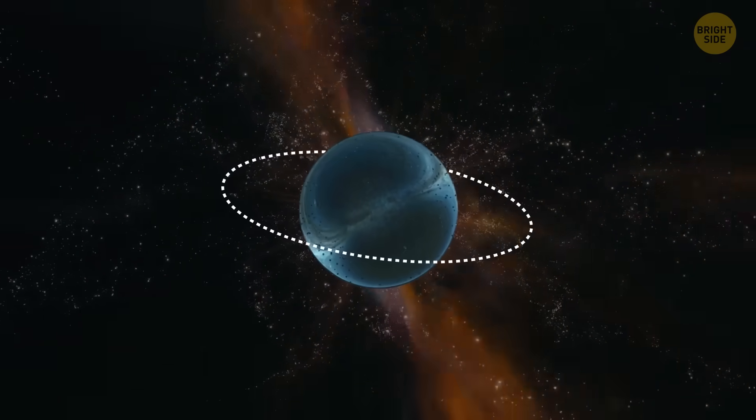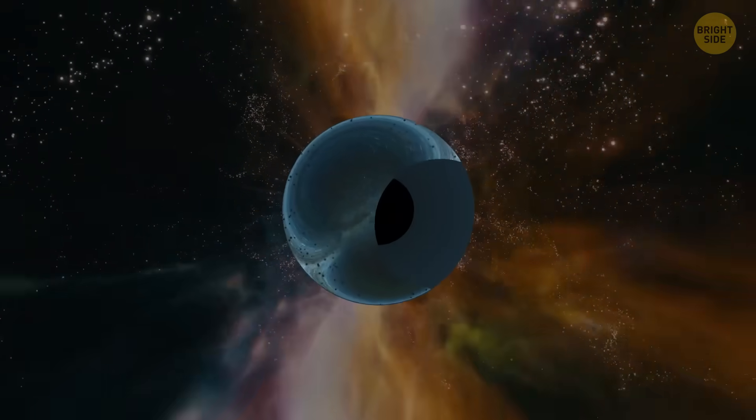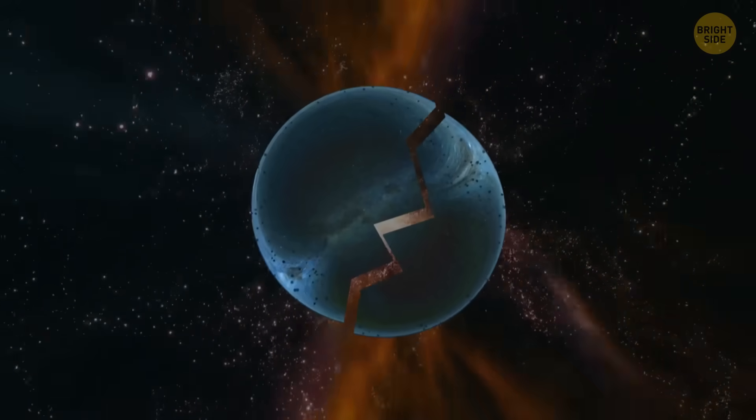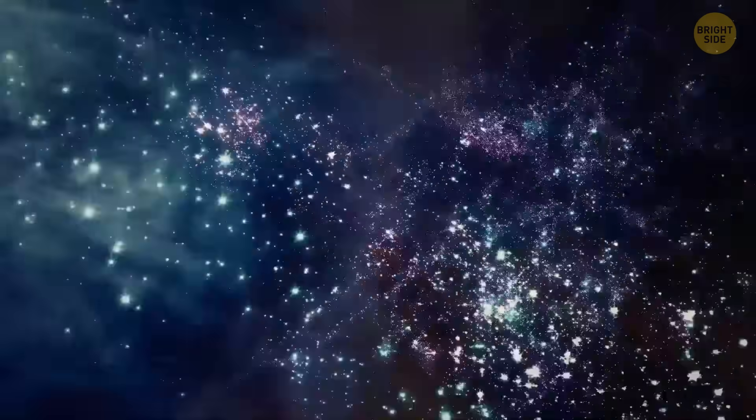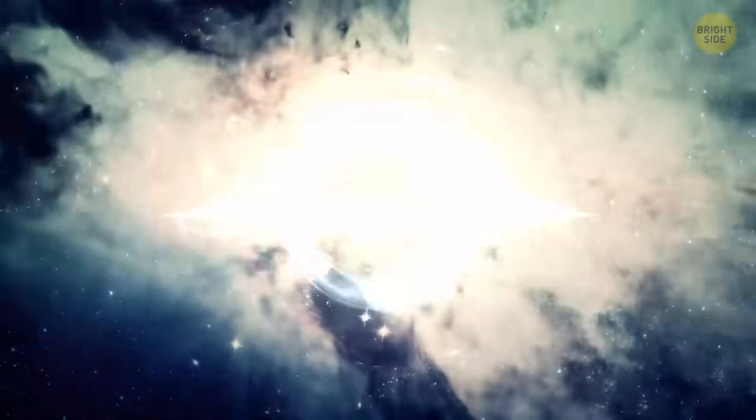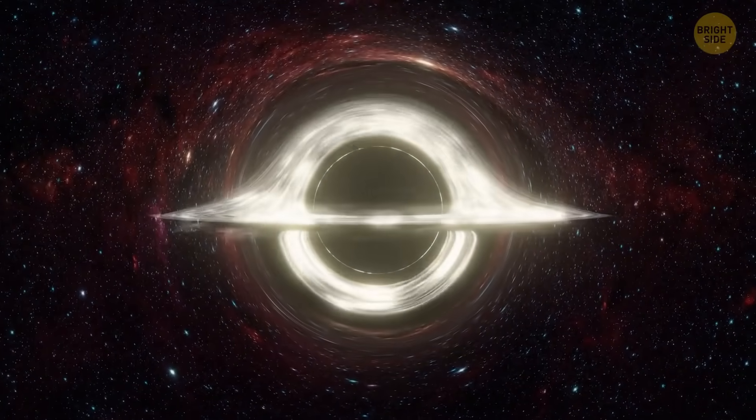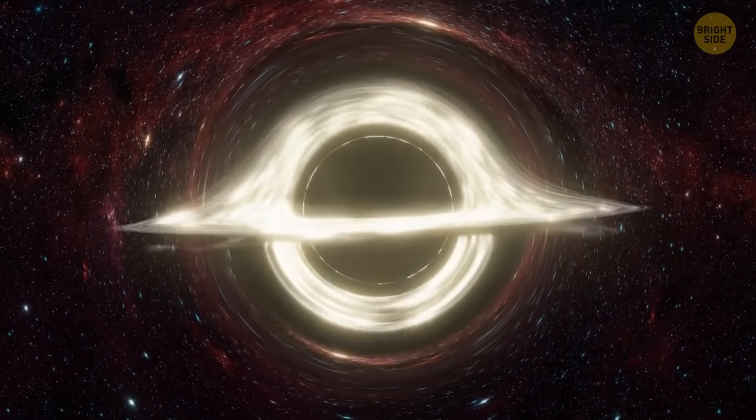Another problem is that gravastars would only be stable in specific cases. For example, if they spin too fast or their shell is too thick, they might start to wobble or break apart eventually. Though it could actually take billions of years. Plus, even if we don't see them right now, remember that this is exactly what happened to the black holes themselves.